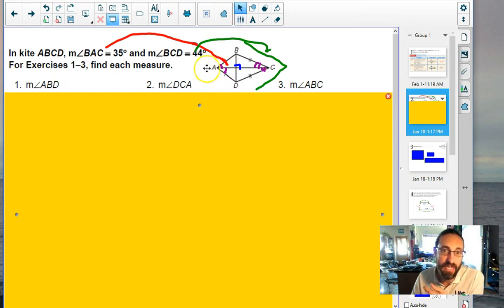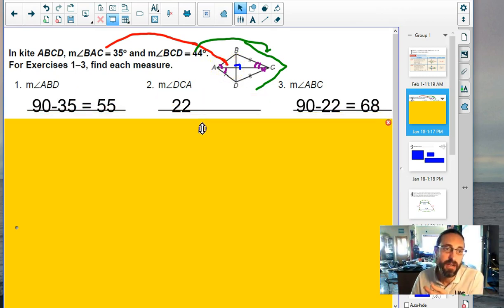Well for the first one ABD, oh this angle's 90, this one's 35, 90 minus 35 is 55. DCA, oh half of 44. And ABC, what I did was I said 90 minus 22. Now why did I do 90 minus 22 to get 68? Well, ABC.